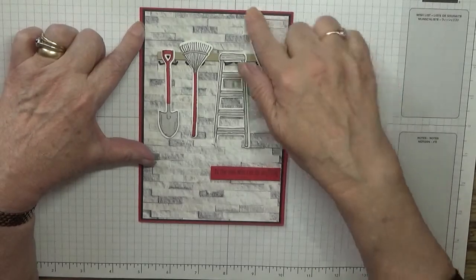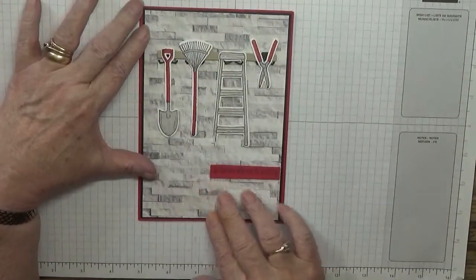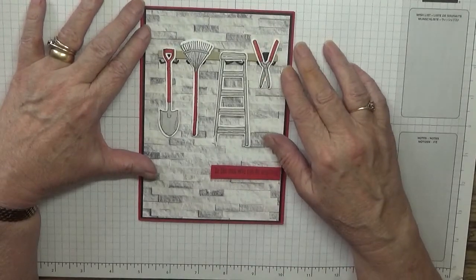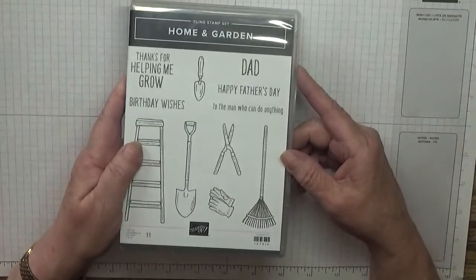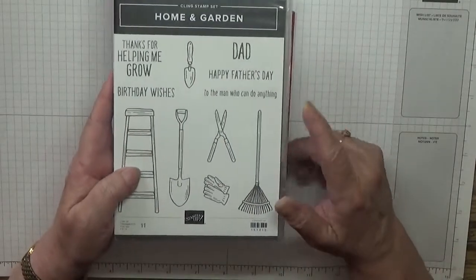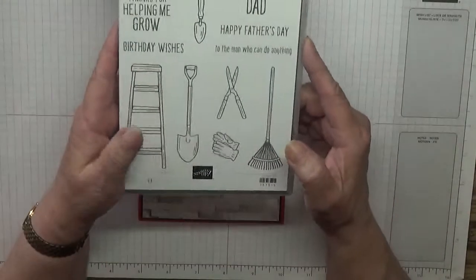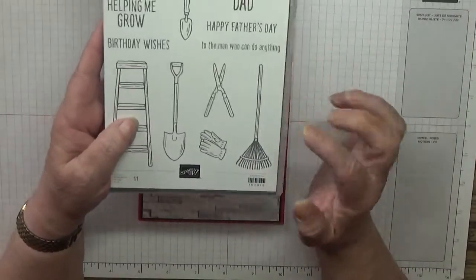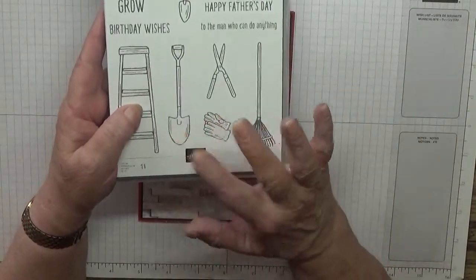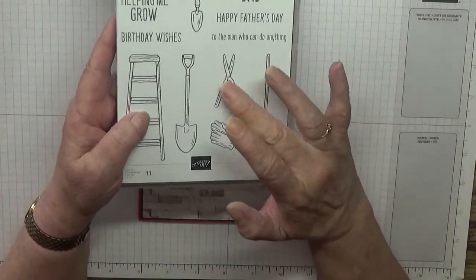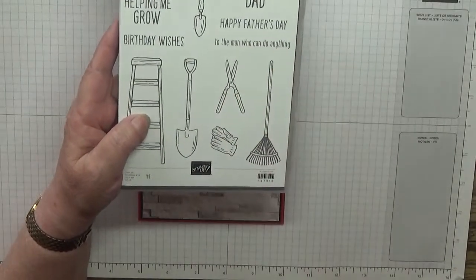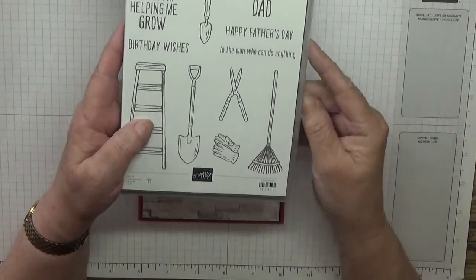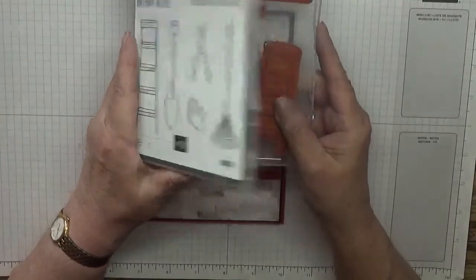I cased this card from the catalogue. It uses the Home and Garden stamp set, and I'm going to be using the ladder, rake, spade, and shears, along with the sentiment 'to the man who can do anything.'